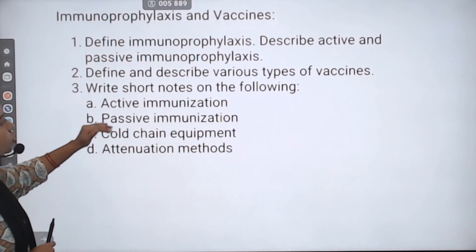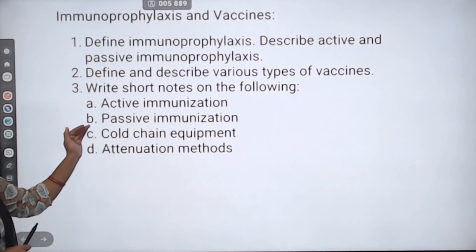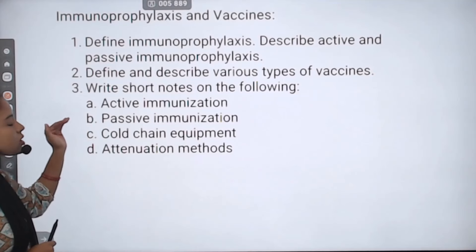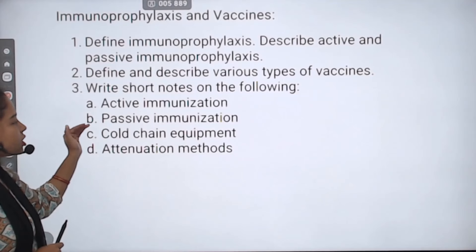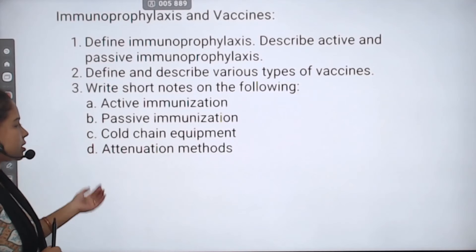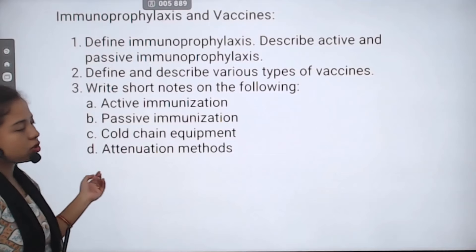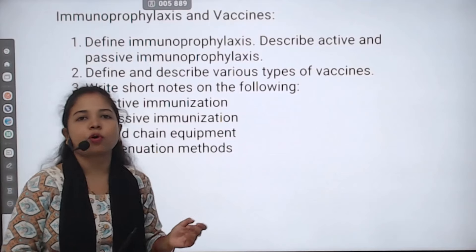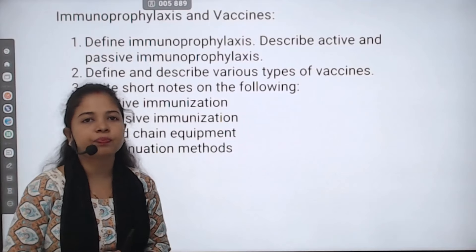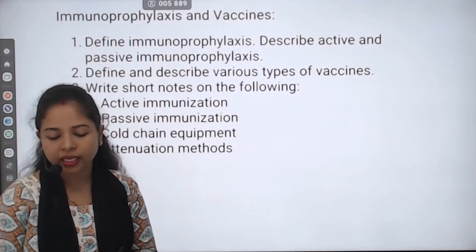Write short notes on the following: active immunizations, passive immunizations, cold chain equipment, and anti-neurotoxin method. These are all important questions that we have covered.